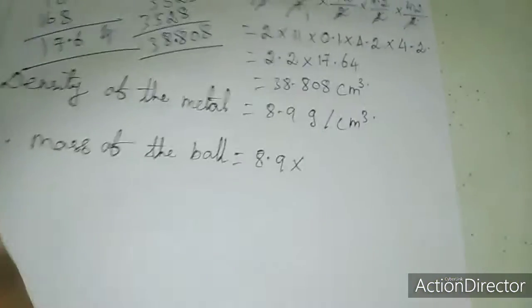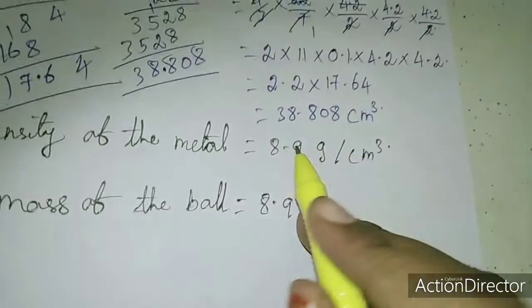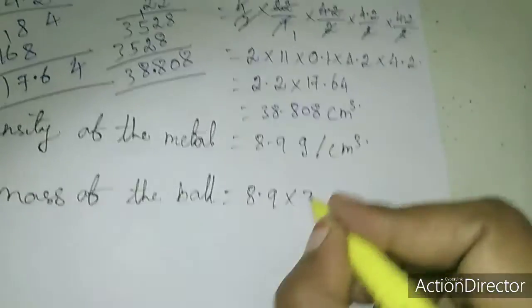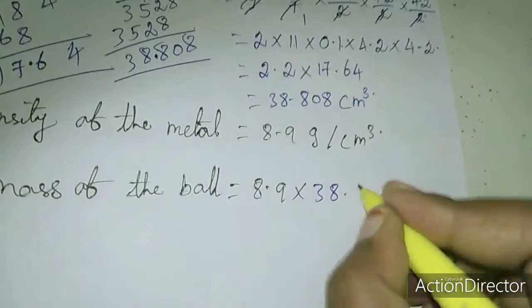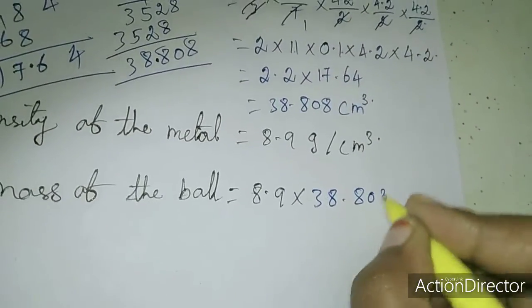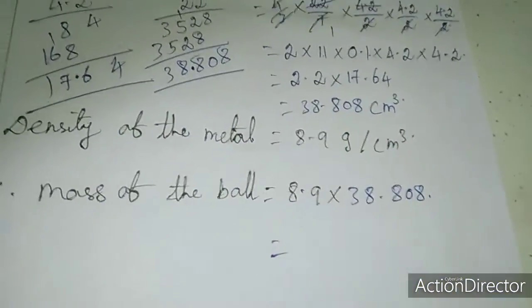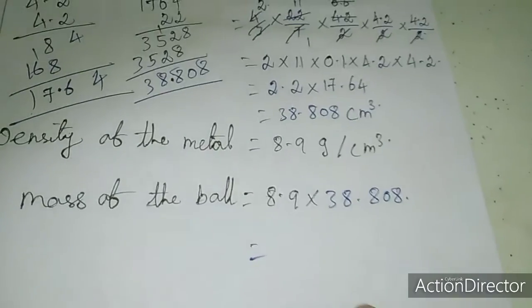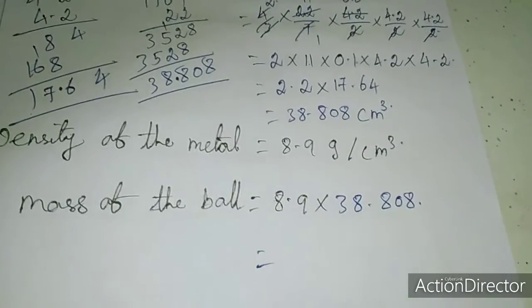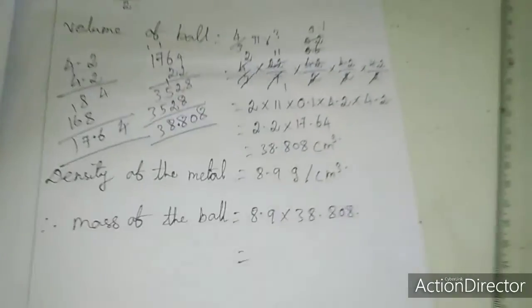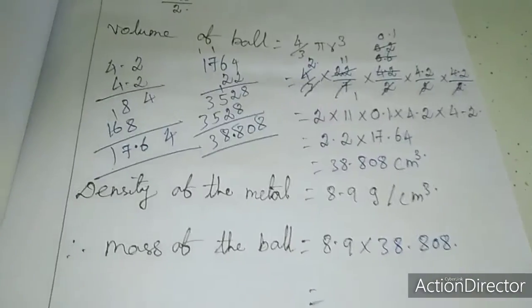This is the volume. We need the mass. So the mass value — multiply the volume by 8.9. If you multiply, you will get the mass value. This simplification is homework for you. Now I will move to the fourth sum.